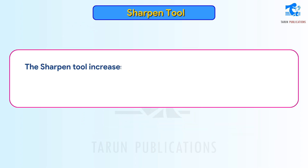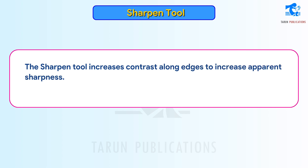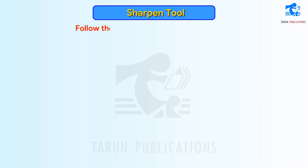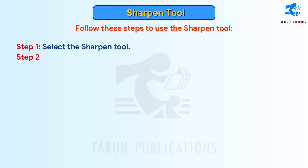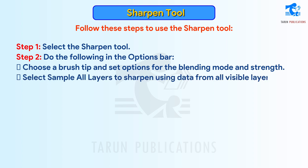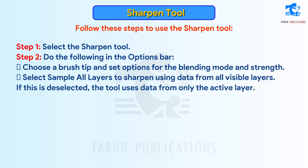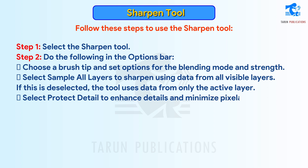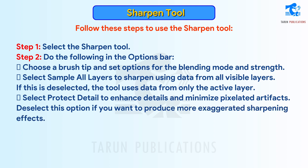Sharpen Tool increases contrast along edges to increase apparent sharpness. The more you paint over an area with the tool, the more sharpening increases. Follow these steps. Step 1: Select the Sharpen Tool. Step 2: In the Options bar, choose a brush tip and set options for the blending mode and strength. Select Sample All Layers to sharpen using data from all visible layers; if deselected, the tool uses data from only the active layer. Select Protect Detail to enhance details and minimize pixelated artifacts; deselect for more exaggerated sharpening effects. Step 3: Drag over the part of the image you want to sharpen.